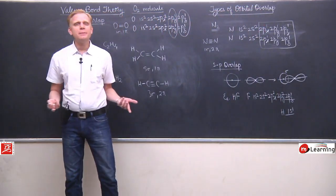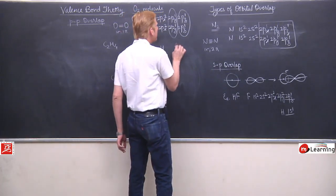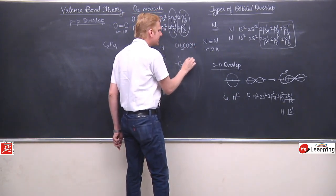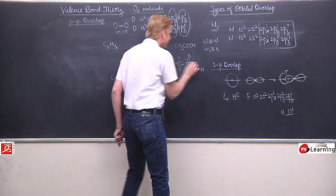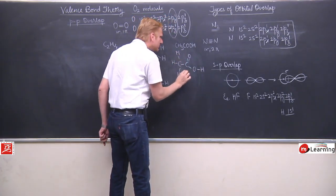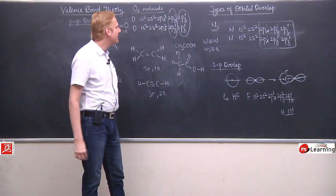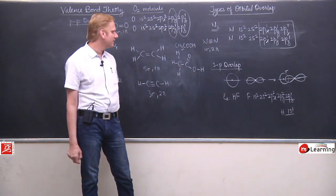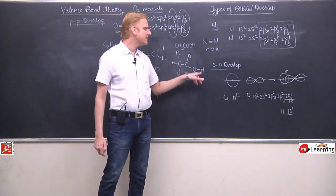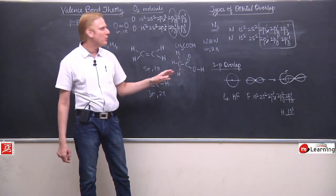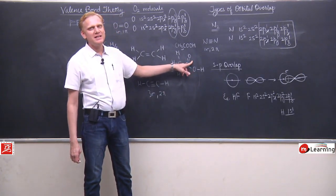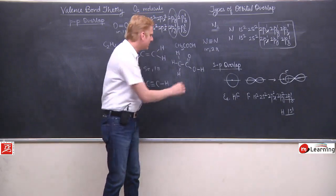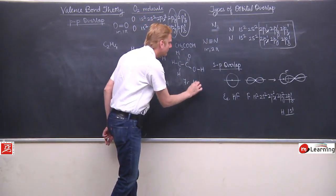Isi tarah se aap kisi bhi example ki baat kar sakte hai. Let us take the example of ethanoic acid or acetic acid. Acetic acid ko aap dekhe hai — structurally it is like this. All single bonds will be counted as sigma bonds and the double bond will have one sigma and one pi. So in the molecule of acetic acid, seven sigma bonds are present and one bond is pi bond.